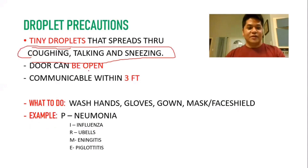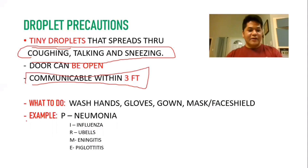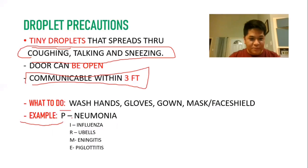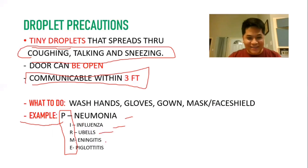The door can be open for droplet precautions, and the disease is communicable within three feet. The mnemonic for droplet precaution diseases is PIRME: Pneumonia, Influenza, Rubella, Meningitis, and Epiglottitis.